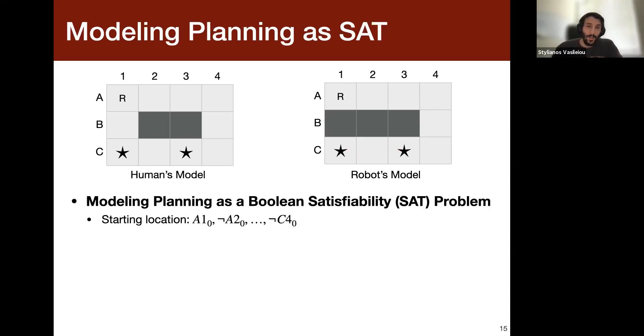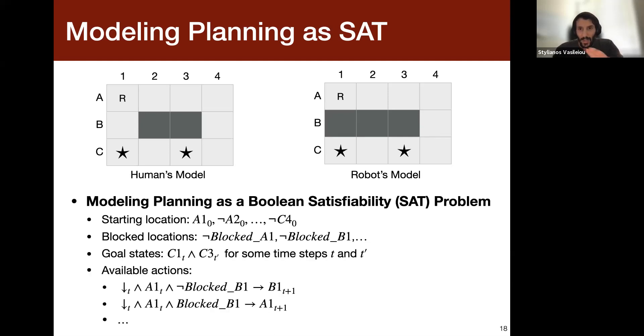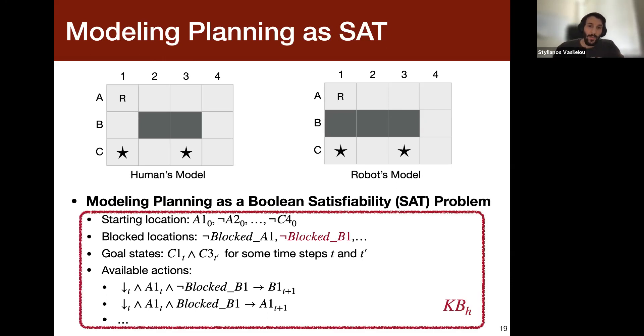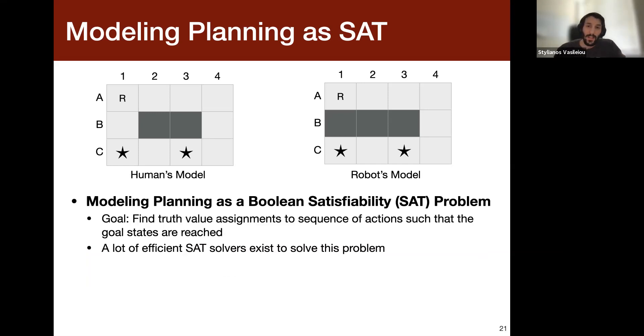And of course, now to solve this, in our case, we basically model this planning task as a SAT problem, as I'm sure all of you know. But just for completeness, I'm going to mention these things. So basically, we can encode all the locations, the starting locations, the block locations, the goal states of the problem, and all the available actions that you can use in the problem. And basically now, this here will be the knowledge base of the human—see here that they're not blocked at B1. But now, in the agent's knowledge base, B1 is blocked. So that's the difference.